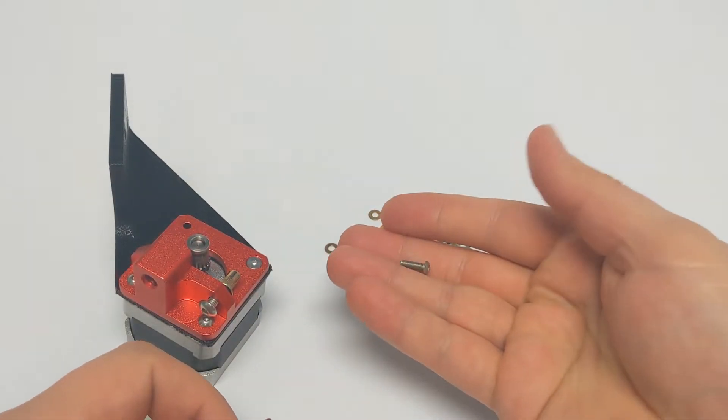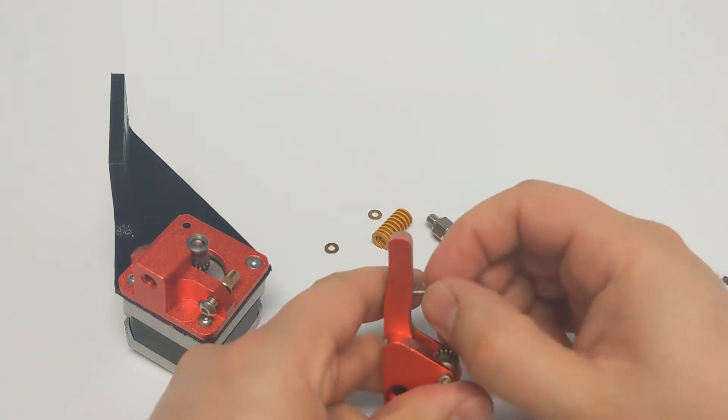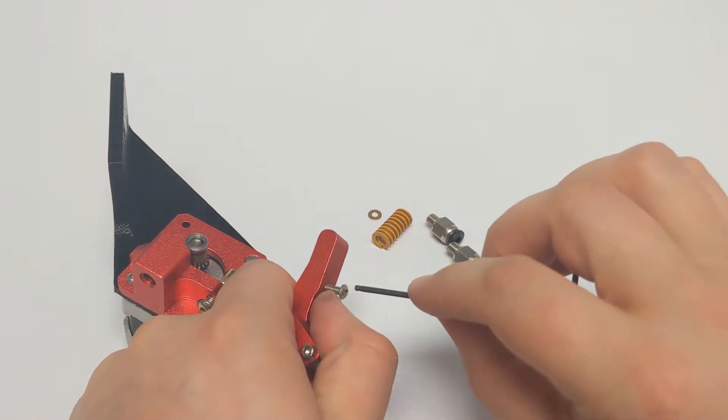Attach an M3 screw to the extruder arm. This will keep the extruder spring in place when everything is put together.